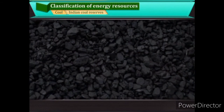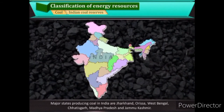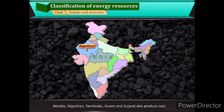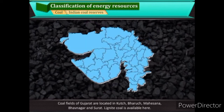Major coal-producing states in India are Jharkhand, Orissa, West Bengal, Chhattisgarh, Madhya Pradesh, and Jammu & Kashmir. Besides these, Rajasthan, Tamil Nadu, Assam, and Gujarat also produce coal. Coal fields of Gujarat are located in Kutch, Bharuch, Mehsana, Bhavnagar, and Surat. Lignite coal is available in Gujarat.